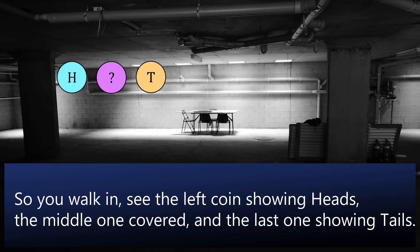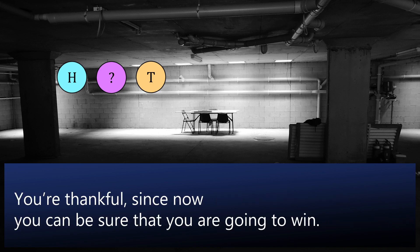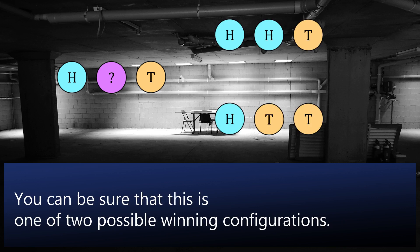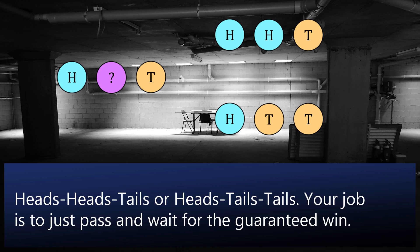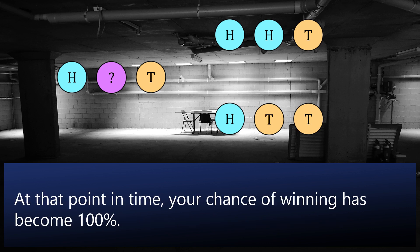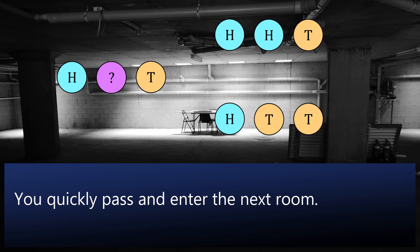Anyway, back to our Calamari Carnival story. So you walk in, see the left coin showing heads, the middle one covered, and the last one showing tails. You're thankful, since now you can be sure that you are going to win. You can be sure that this is one of two possible winning configurations: heads-heads-tails or heads-tails-tails. Your job is to just pass and wait for the guaranteed win. At that point in time, your chance of winning has become 100%. You quickly pass and enter the next room.